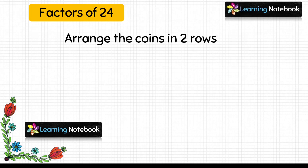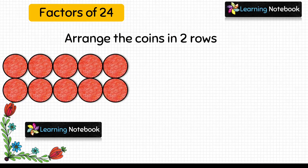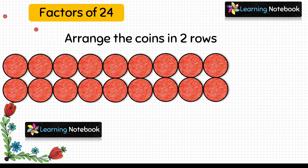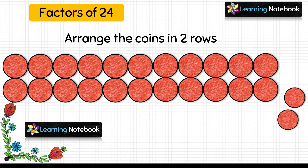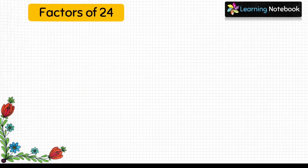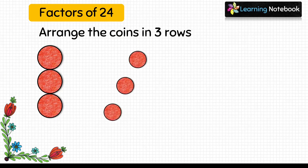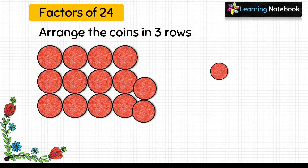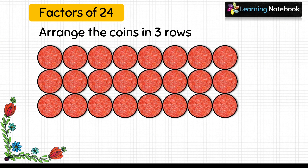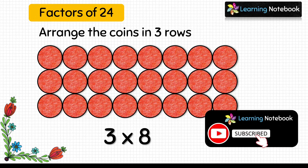Now let's arrange these 24 coins in two rows — so each row has 12 coins. So this arrangement can be expressed as 2 into 12. Next, we will arrange these coins in three rows — so each row has got 8 coins. And this arrangement can be expressed as 3 into 8.